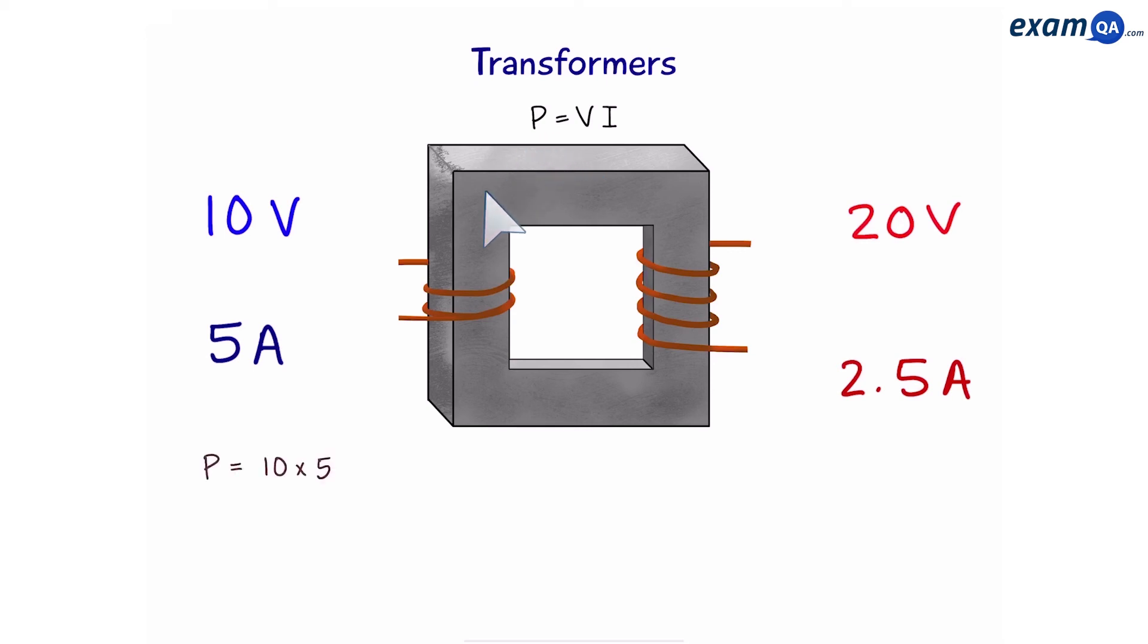For example, on the left, p is going to be v times i, which is 10 times 5. That's going to give us 50. On the right, p is going to be 20 times 2.5, which is also equal to 50. So, the fact that power is the same on both sides, we can say the following. Voltage of primary times current of primary is the same as voltage of secondary times current of secondary. And this is the second equation that we need to know.